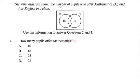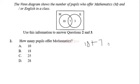The Venn diagram shows the number of people who offer mathematics and English in a class. Use this information to answer questions 2 and 3. For question 2: how many people offer mathematics? The people who offer mathematics are all those in the full circle for M — that is 18 plus 7, which equals 25. Because if you offer both mathematics and English, you are still offering mathematics. So the correct answer is C.